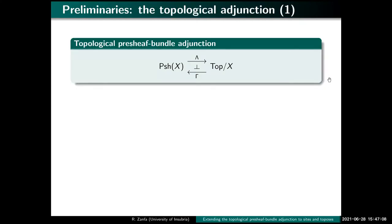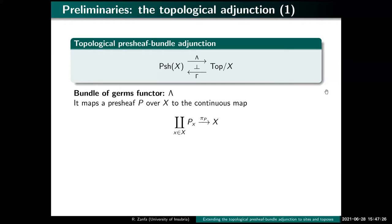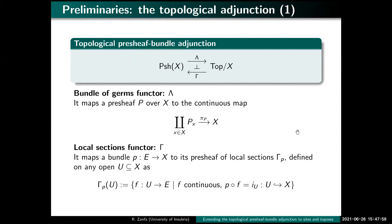For those who haven't seen Olivia's lectures last week, I'll recall how the topological pre-sheaf bundle adjunction works. We have this adjunction where X is any topological space. The functor lambda is called the bundle of germs. It takes a pre-sheaf P and computes this set — these are the stalks of germs of the pre-sheaf. Basically, you take the germs of the elements of P at a point X, glue all these sets together into a coproduct, and have a canonical projection. You can topologize these sets so that this map becomes a continuous map. This is called the bundle of germs of the pre-sheaf P.